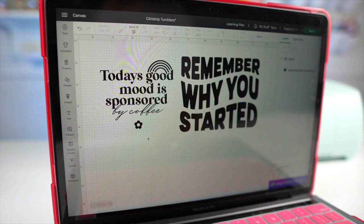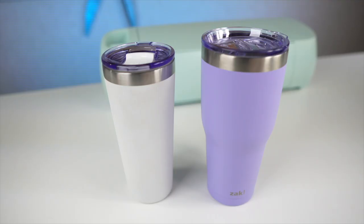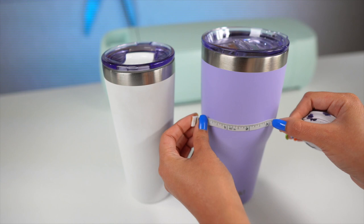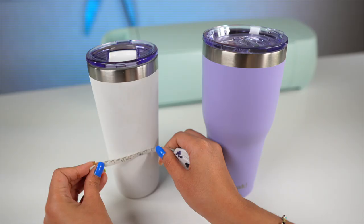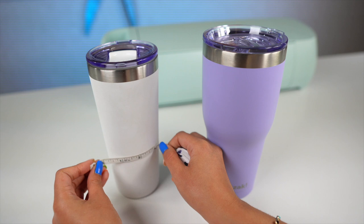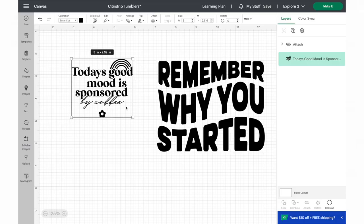These are the two designs that I picked out. I thought they would be perfect for my tumblers. I'm using my measuring tape to figure out how big to make my designs. This one will be about three inches wide by two inches in height. So I think this one will be good with three inches wide by about two, two and a half inches high.